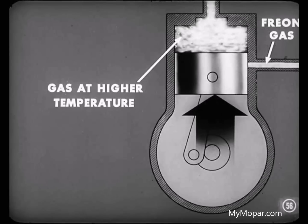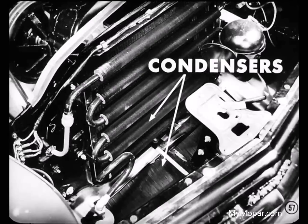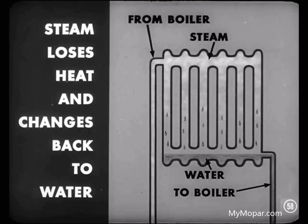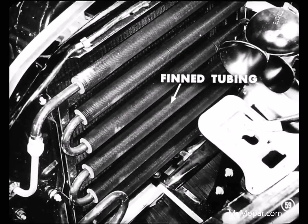Our compressed Freon gas has a high temperature as it leaves the compressor, so it's easy to see that a cooling effect will change it back into a liquid. And this action takes place in the condensers, located here in front of the radiator and fan. You mean that the air blowing across these condensers causes the Freon gas to change back into a liquid? That's right, Bill. Going along with our steam heating comparison, you might say that the condenser could be likened to the radiator in the steam heating plant, where the steam gives up its heat and is changed back into water for its trip back to the boiler.